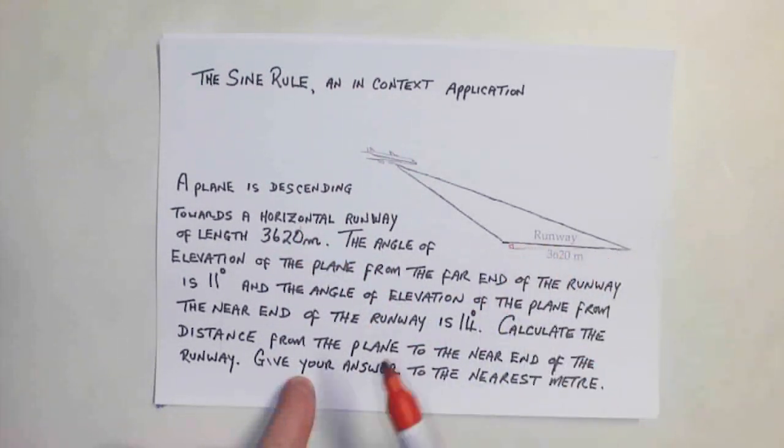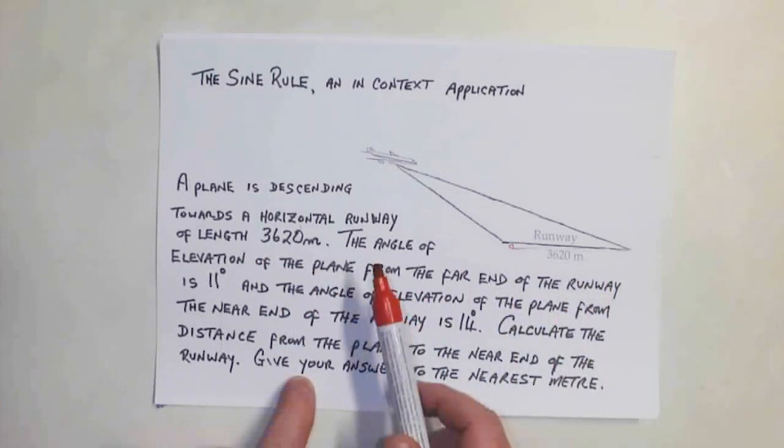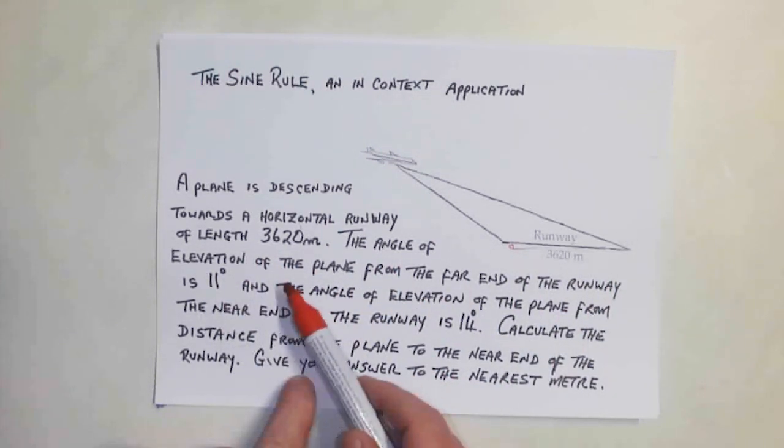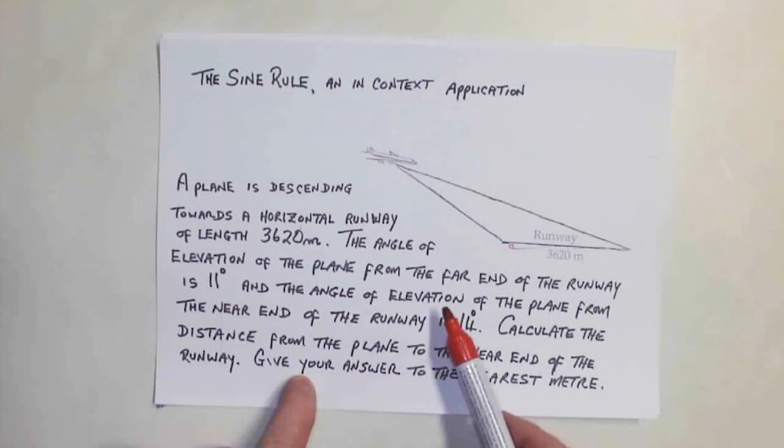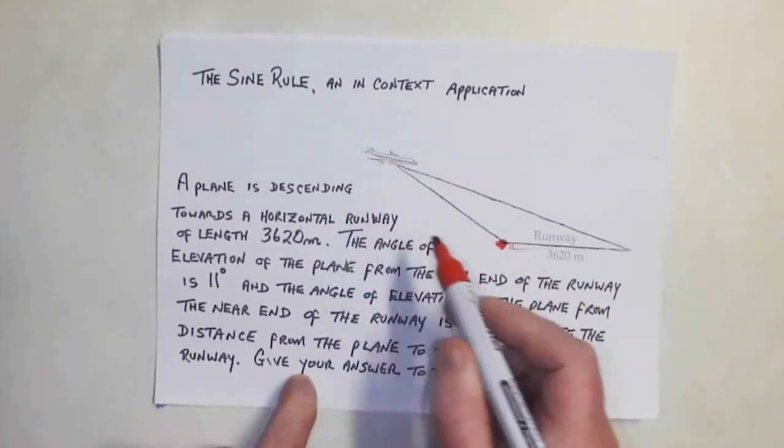The length is 3620 meters. The angle of elevation of the plane from the far end of the runway is 11 degrees, and the angle of elevation of the plane from the near end of the runway is 14 degrees. I'm taking this to be near because it's closer to the plane, and this one here is far.